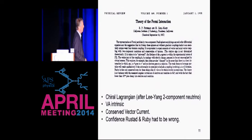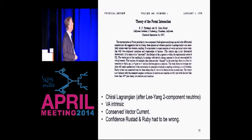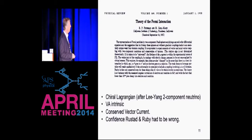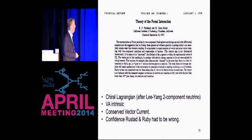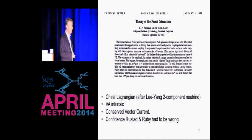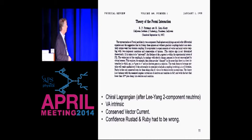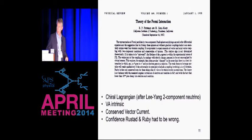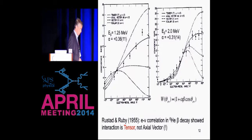And then just a year later, Feynman and Gell-Mann developed the theory of the Fermi interaction in what we still regard as the modern context. They proposed that there was a chiral Lagrangian, inspired somewhat by Lee and Yang's two-component neutrino idea. In the theory, a vector and axial vector interaction is intrinsic, although the relative sign is not determined — that has to be determined by experiment. The vector current is like the electromagnetic current: it's conserved and not renormalized in nuclei.